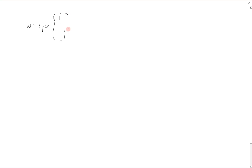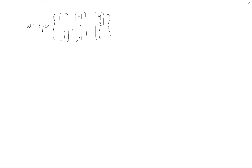This video will work out an example of finding an orthogonal basis by using the Gram-Schmidt procedure. Suppose that we have a subspace W, which is the span of these three vectors: (1, 1, 1, 1), (-1, 4, 4, -1), and (4, -2, 2, 0). These three vectors are linearly independent, and thus span a three-dimensional subspace of R4. Let's call these three vectors x1, x2, and x3.